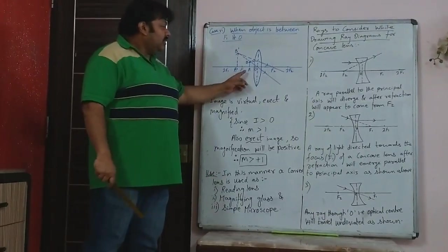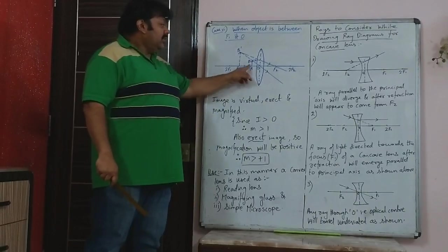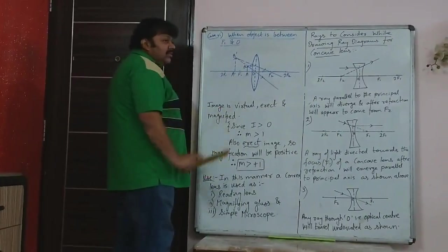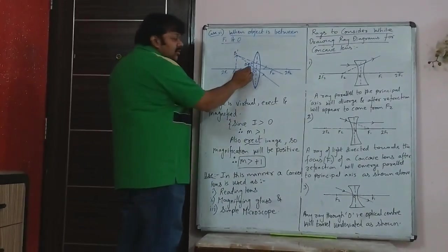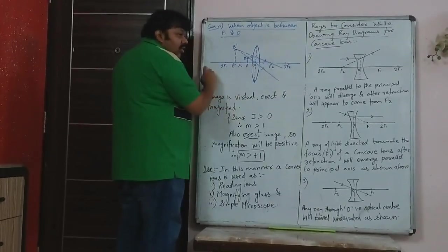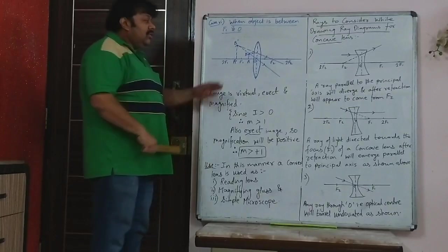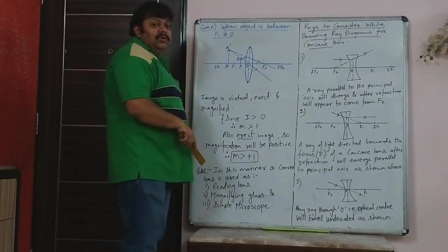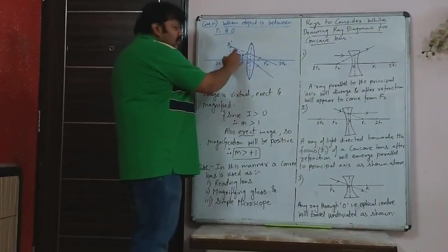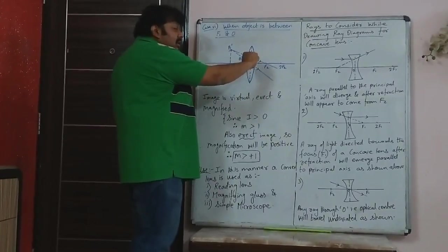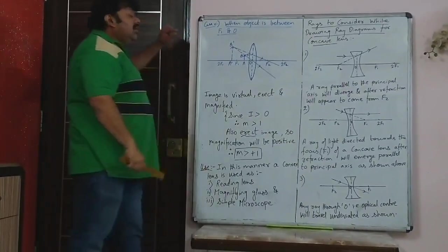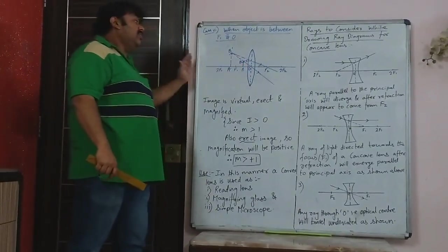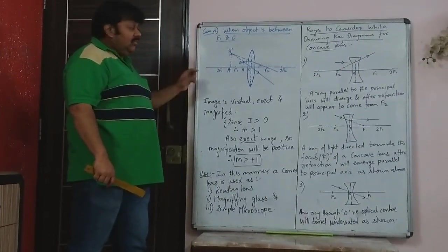The object AB is placed between O and F1. When you draw this figure, it is better to keep the object closer to O than to F1. If you keep it close to O, the rays will be more inclined and will fit inside the page. If you keep it very close to F1, the rays will be almost parallel, so they will go very far and not fit inside the page. Make sure there is space on the left-hand side of the lens, because the image is formed there.